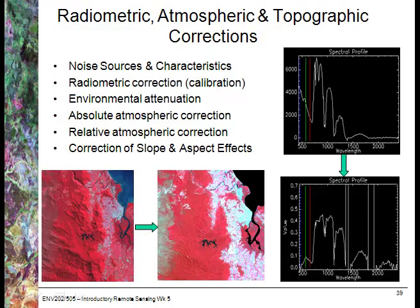Let's have a look at some radiometric, atmospheric and topographic corrections. In the bottom image we're looking at an example of topographic correction in northern Queensland. You can see that the right-hand image appears a lot flatter, with the effects of the terrain removed from the first image using a digital elevation model.